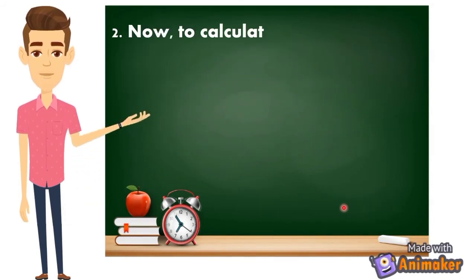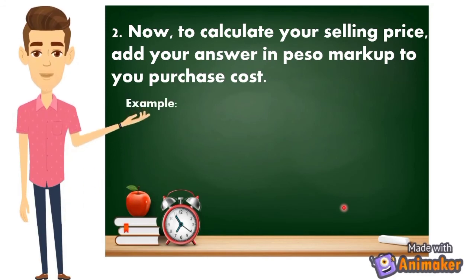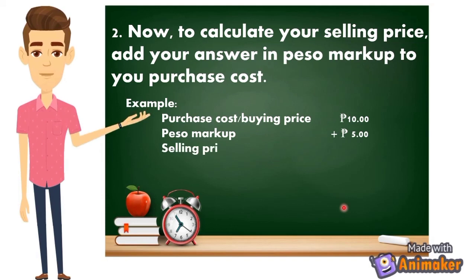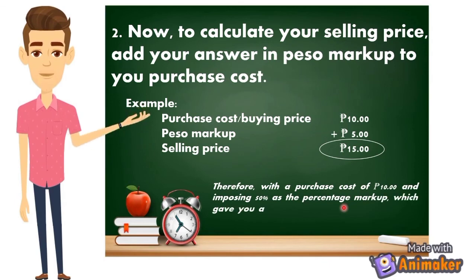Step B2: to calculate your selling price, add your peso markup to your purchase cost. So with a purchase cost of 10 pesos and a peso markup of 5 pesos, your selling price will be 15 pesos. Therefore, with a purchase cost of 10 pesos and a 50 percent markup giving you a 5 peso markup, you will sell your product for 15 pesos.